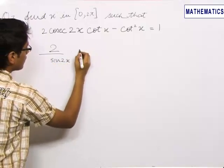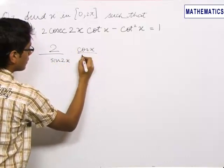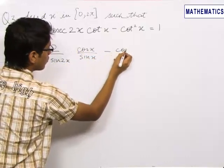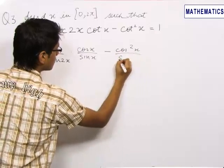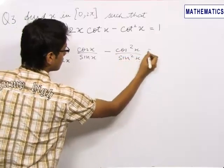Cot x can be written as cos x upon sin x minus cos square x upon sin square x equals 1.